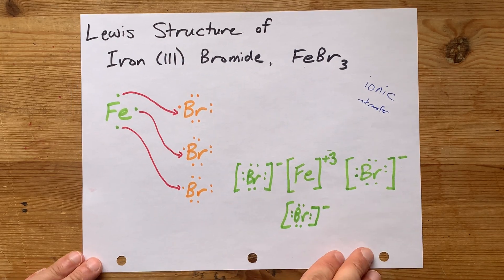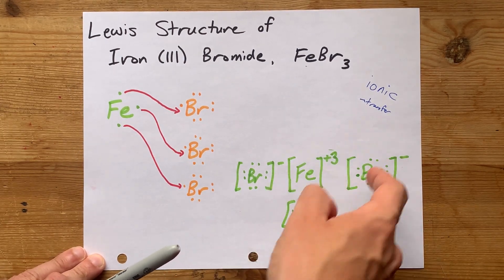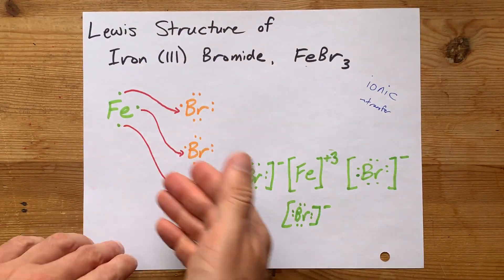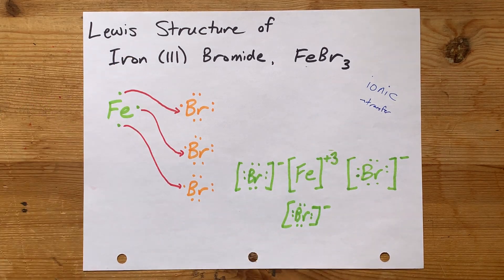One iron with a plus 3 charge. Three bromines with complete octets and minus 1 charges each. This is the Lewis structure you're looking for. Thank you for being with me, and best of luck.